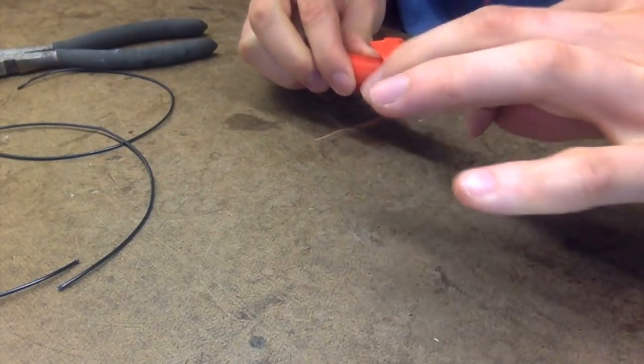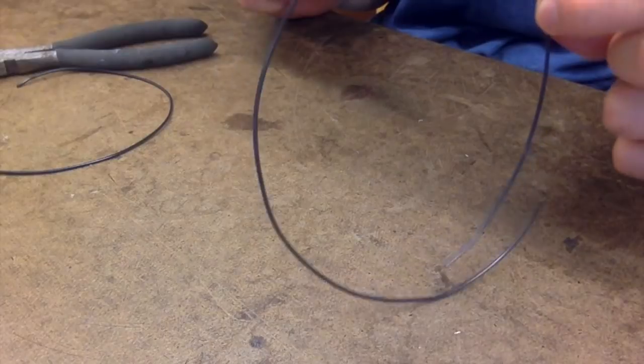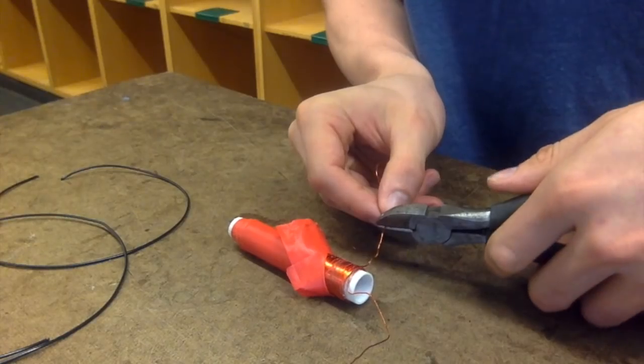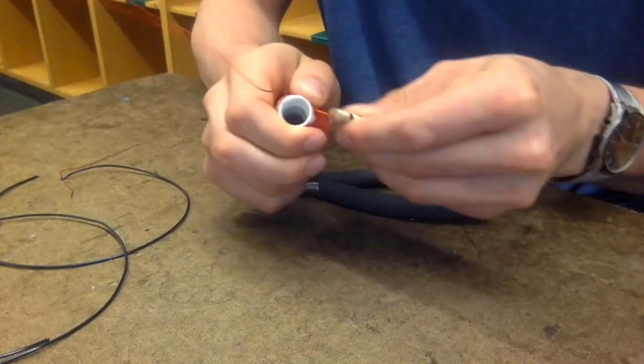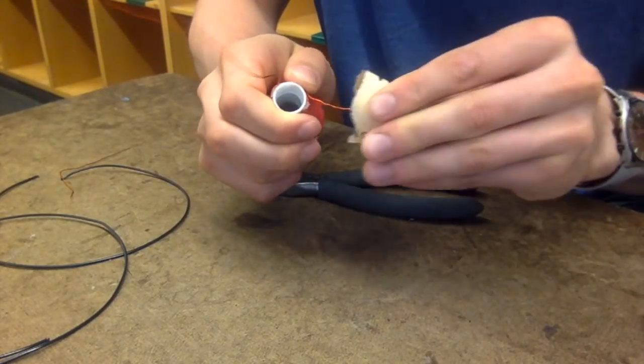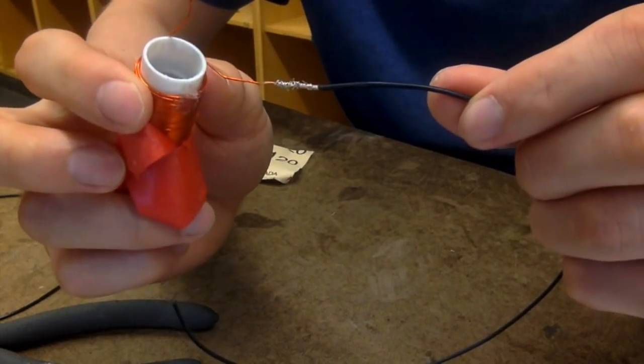I decided I didn't like the aesthetic of these copper wires sticking out, so I decided to replace them with this black wire. I opened up the solenoid a bit and cut the wires short. I then stripped the insulation from the copper wire, and wove it into the fibers of the black wire.